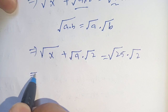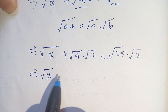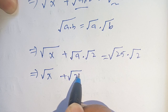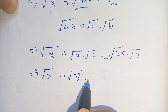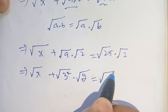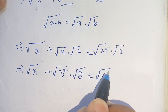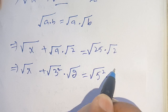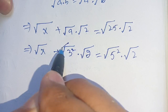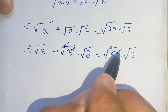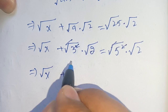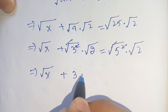In the next step, we write square root of 9 as square root of 3 squared, and square root of 25 as square root of 5 squared. We then cancel the square and square root in each case, leaving: square root of x plus 3 times square root of 2 is equal to 5 times square root of 2.